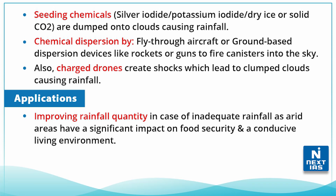This chemical dispersion is done by fly-through aircraft or ground-based dispersion devices like rockets or guns to fire canisters into the sky. Also, some charged drones create shocks which lead to clumped or cluster clouds, causing rainfall.